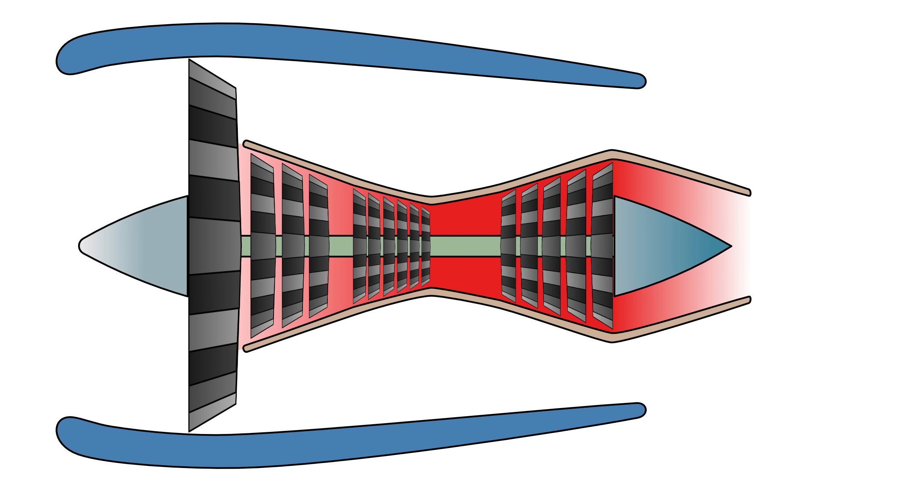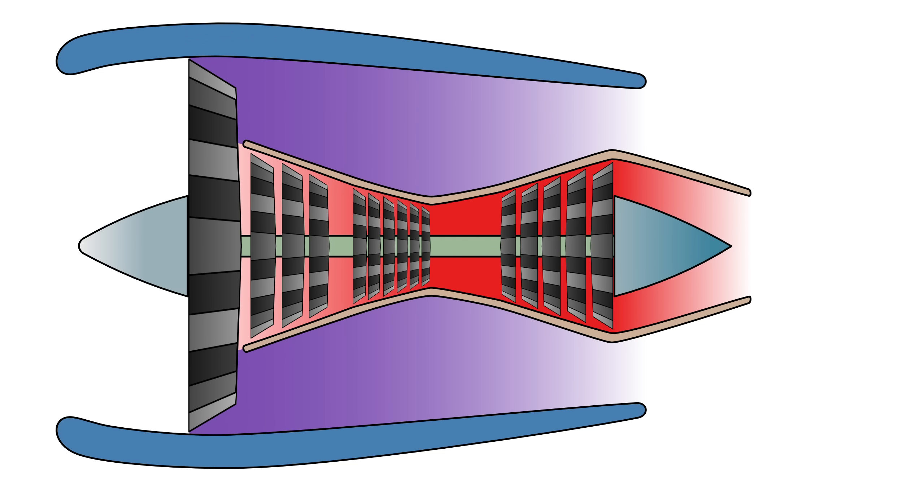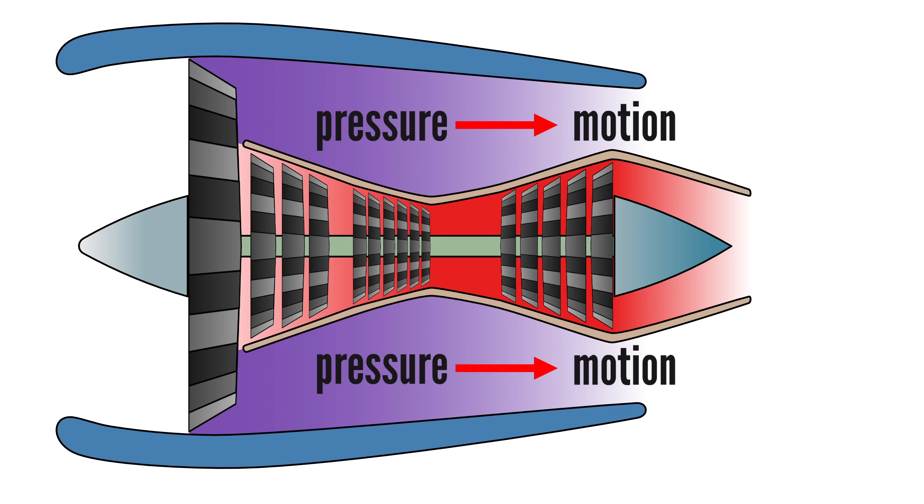Air naturally moves from high pressure to low pressure. In a turbofan engine, the fan pressurizes the air. The duct prevents this high pressure air from escaping sideways, and since it cannot move forward through the fan, it exits rearward through the bypass nozzle. As the air expands and accelerates out the back, pressure energy is converted into kinetic energy, which produces thrust.